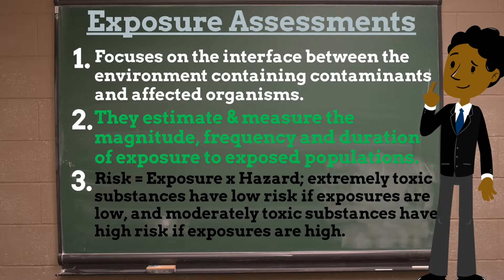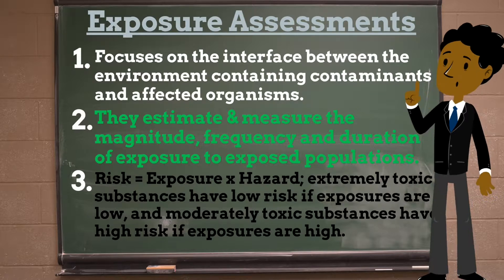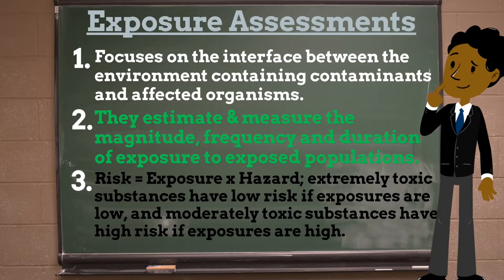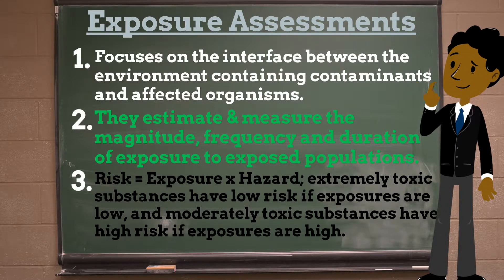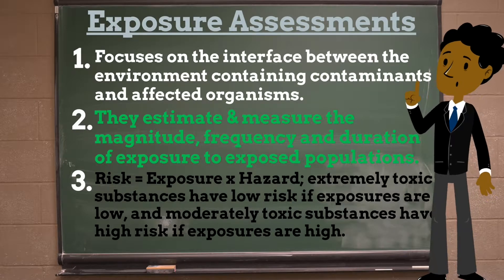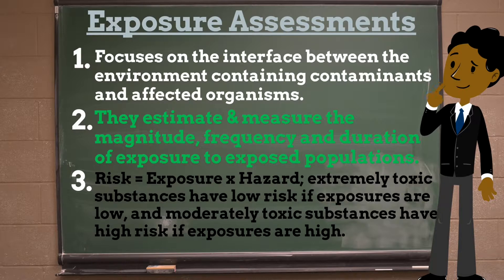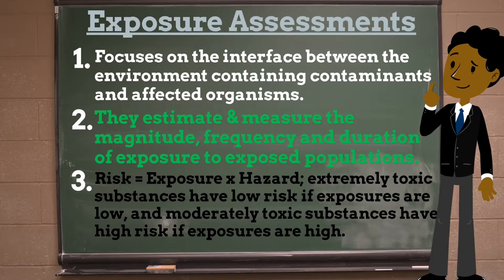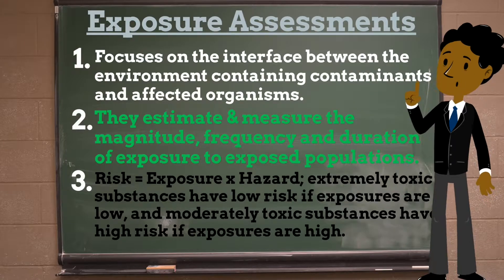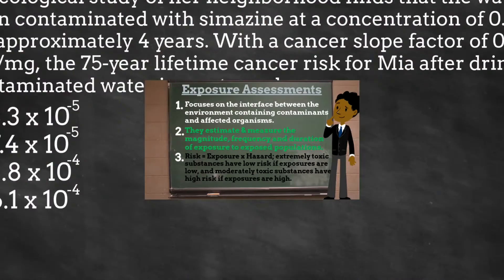Risk is a function of exposure and hazard. For example, even for an extremely toxic substance, the risk of an adverse outcome is unlikely if exposures are near zero. And conversely, a moderately toxic substance may present substantial risk if an individual or population is highly exposed.